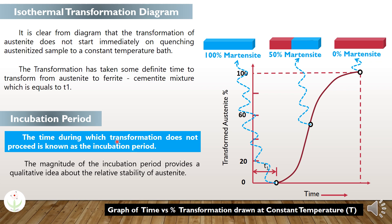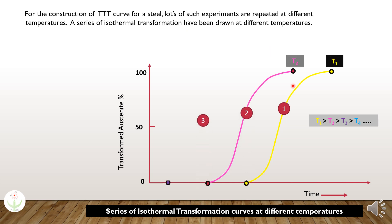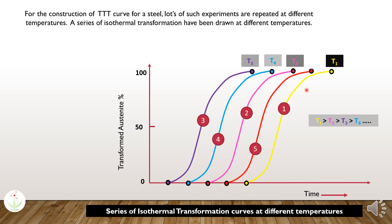The magnitude of the incubation period provides qualitative data about the relative stability of austenite — if we have a smaller incubation period, then austenite has lesser stability, and upon quenching such a sample, the austenite would immediately transform into another structure. For the construction of the time-temperature transformation curve for a steel, lots of such experiments need to be repeated at different temperatures, so a series of isothermal transformation curves have been drawn at different temperatures.